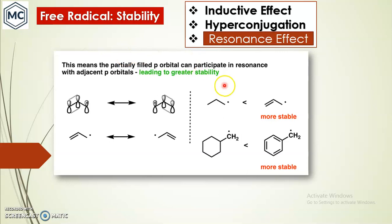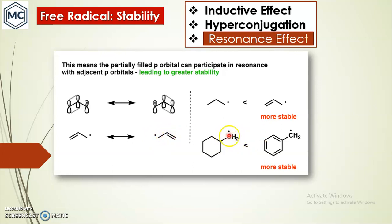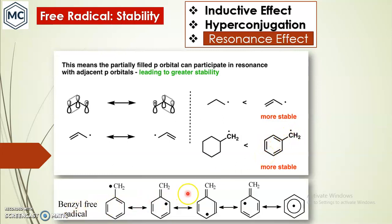The third factor is the resonance effect. When comparing an ethyl radical with an allyl (propenyl) radical, the allyl radical is more stable because it is resonance stabilized — you can draw resonance structures showing delocalization. Similarly, a benzyl radical is more stable than a simple alkyl radical because it is resonance stabilized, with greater delocalization occurring across the pi system.